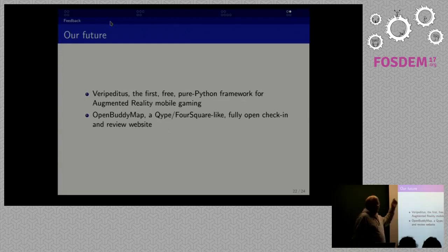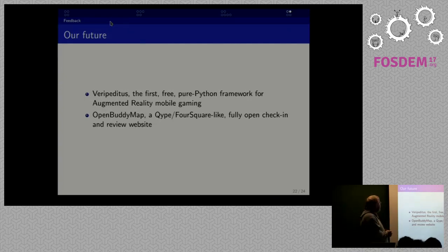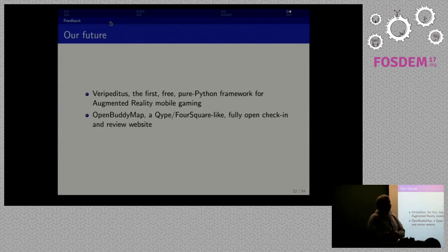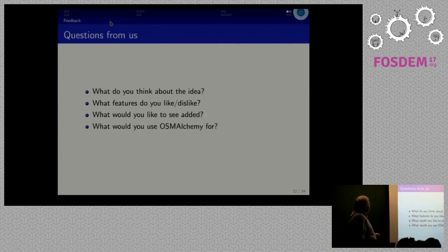We are using OSM Alchemy in the augmented reality framework Veripeditus. You can try it here on campus — go to knightly.veripeditus.org and play an augmented reality game that uses OpenStreetMap data from OSM Alchemy. The next project will be creating a basic review and check-in service like Foursquare or Yelp where you can review any location or check in at locations using OpenStreetMap data, just like I showed in the example.